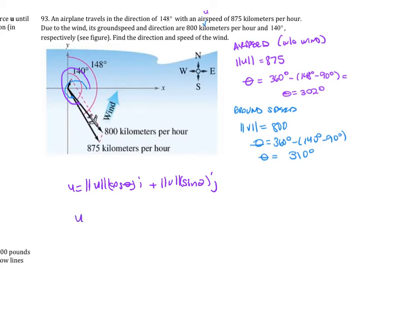Let's write the actual U. That is going to be the magnitude of U is 875 cosine of 302 degrees I plus 875 sine of 302 degrees J. And then let's write our ground speed.